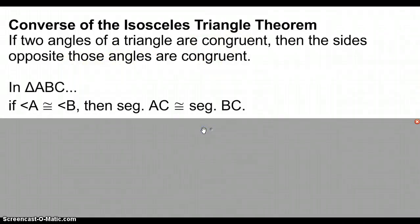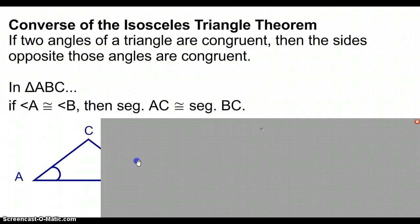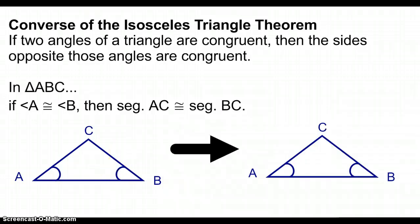So for example, we have triangle ABC, and in triangle ABC, we are shown that angle A and angle B are congruent. And so in that case, if angle A and angle B are congruent, we can show that the sides across from the angles are going to be congruent. So segment AC is congruent to segment BC. So it is just the reverse of the isosceles triangle theorem.